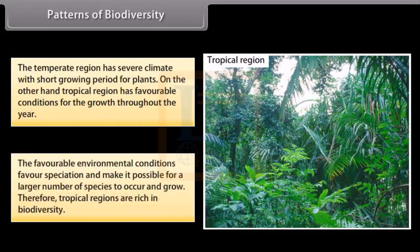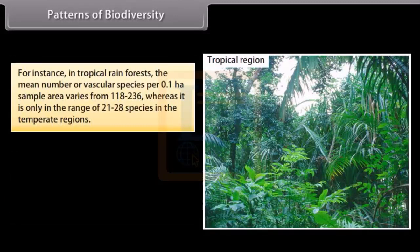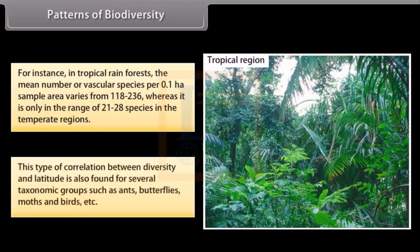tropical region has favorable conditions for the growth throughout the year. The favorable environmental conditions favor speciation and make it possible for a larger number of species to occur and grow. Therefore, tropical regions are rich in biodiversity. For instance, in tropical rainforests, the mean number of vascular species per 0.1 HA sample area varies from 118 to 236,